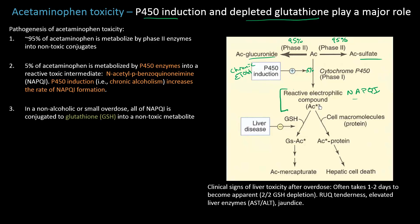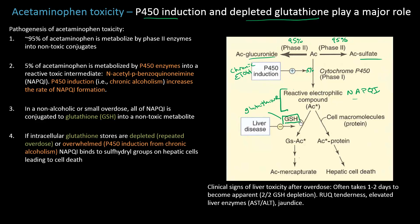In a non-alcoholic or with a small overdose, all of this toxic NAPQI can be conjugated to glutathione (GSH) to form a non-toxic conjugate that can be excreted. However, if glutathione stores are depleted — from a repeated overdose or overwhelmed in the setting of P450 induction from chronic alcoholism or a very large overdose — then NAPQI will bind to sulfhydryl groups on hepatic cells, eventually leading to cell death.